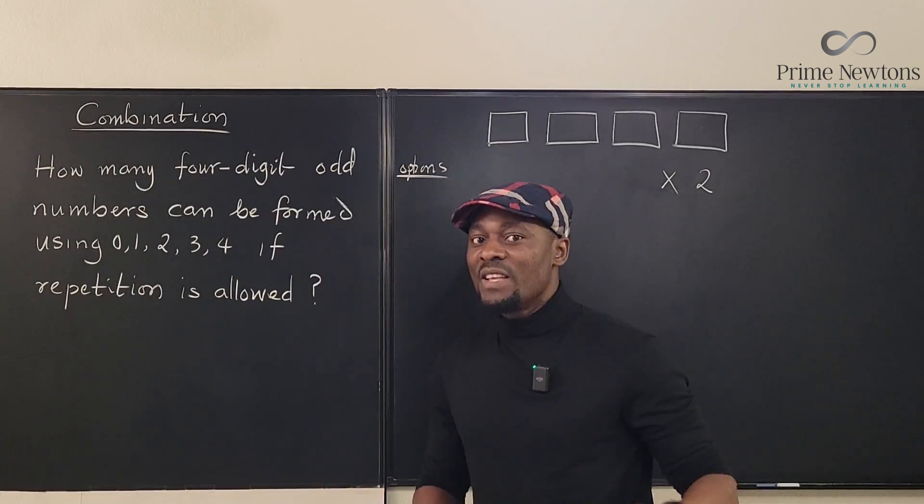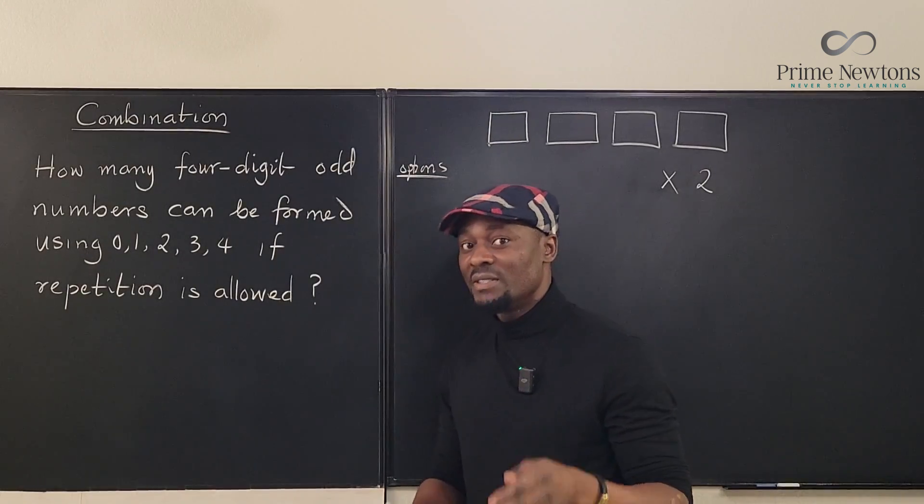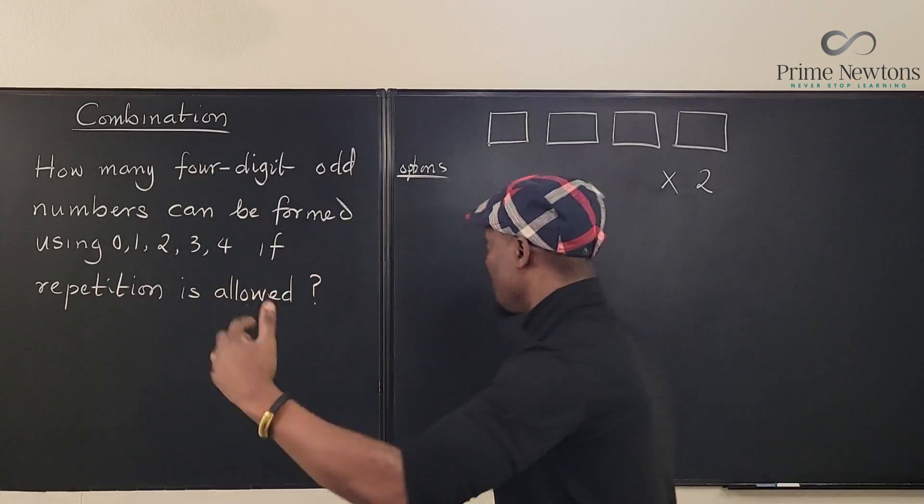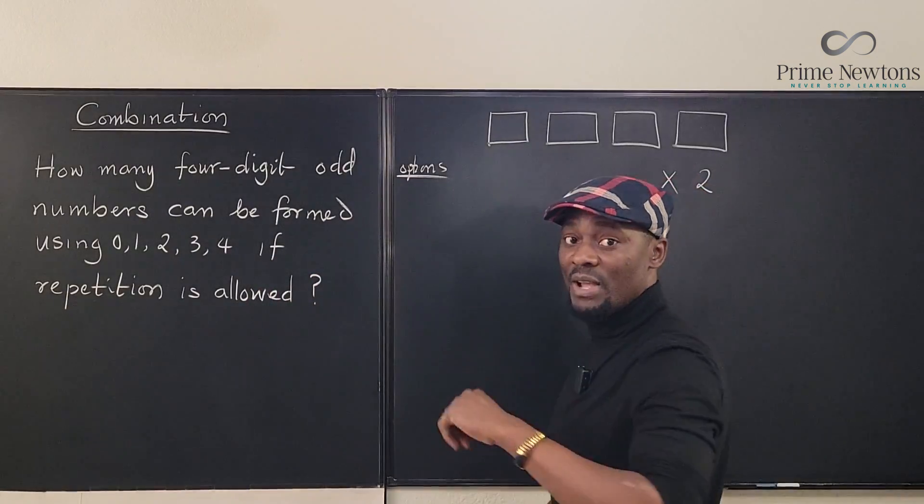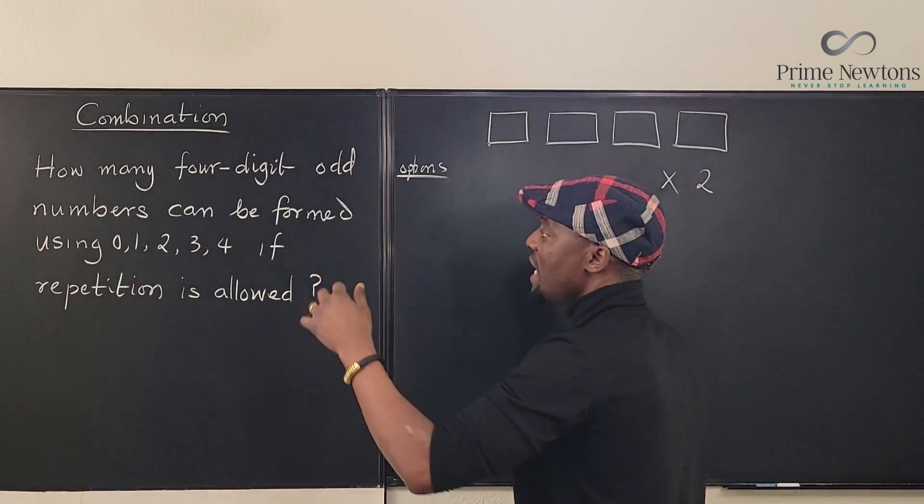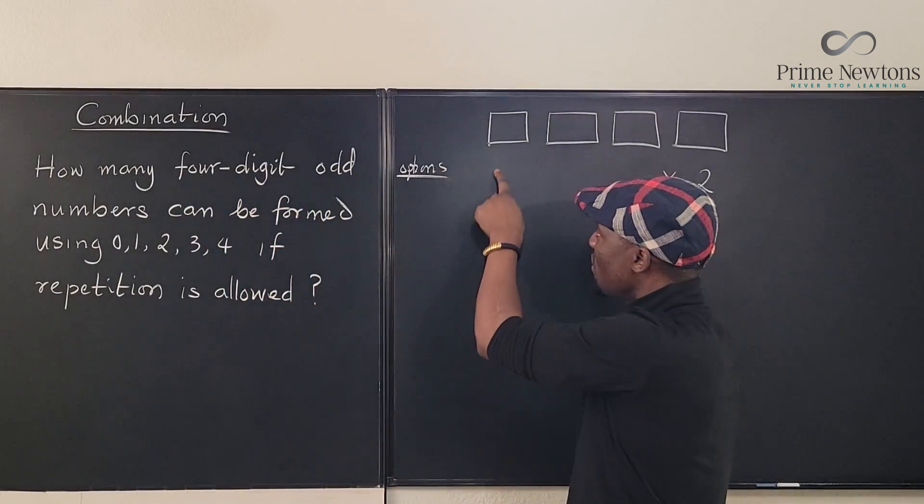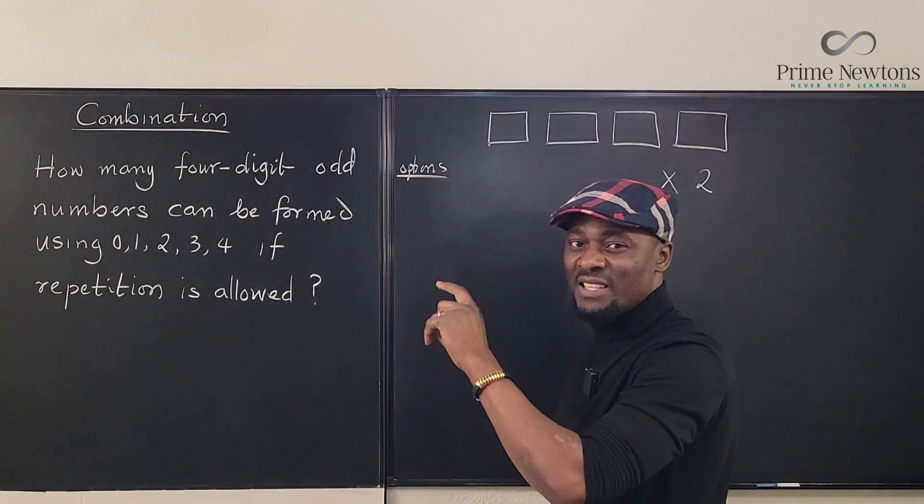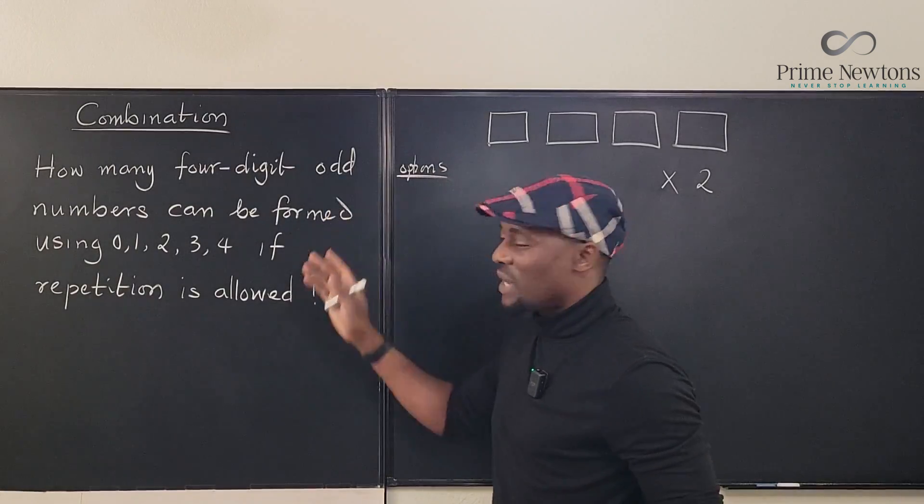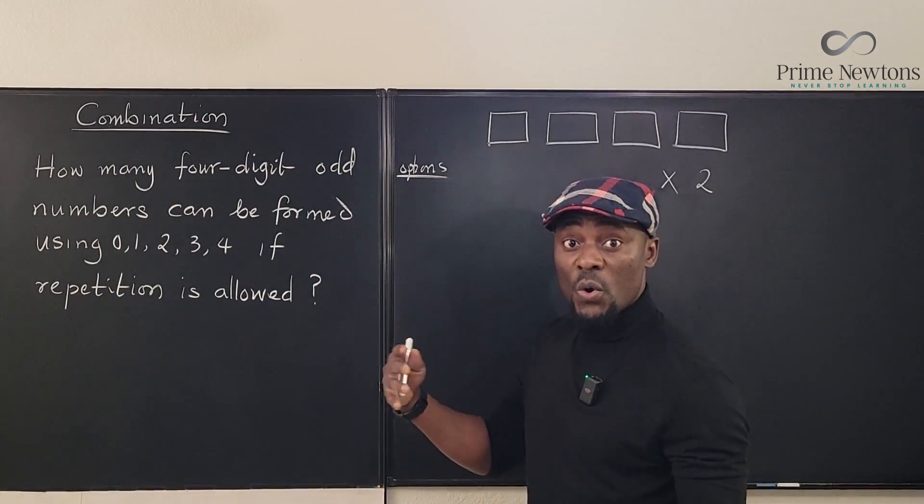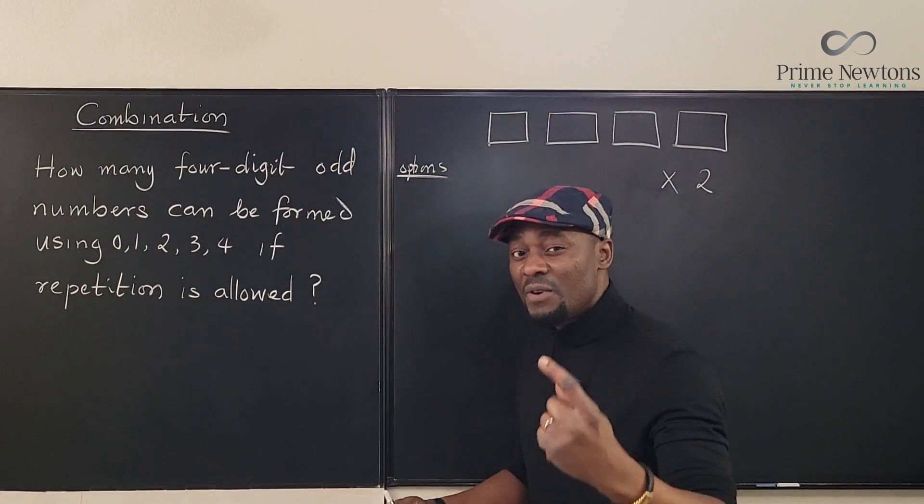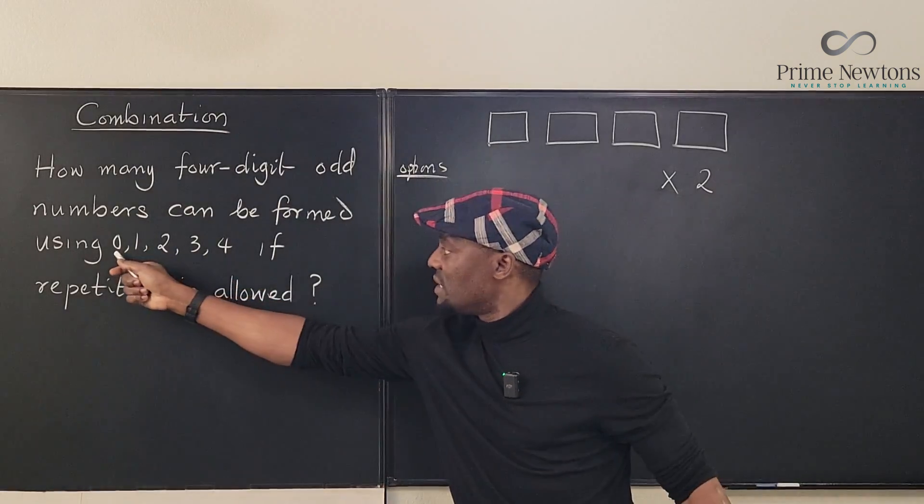Now the next most important number is the first digit. The first digit, remember, it must be a four-digit number. And whenever you want to decide what the first digit is, it doesn't affect whether it is odd or not. However, the first digit of any number cannot be zero.